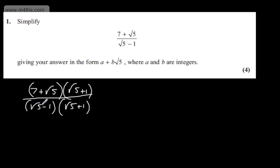In the denominator, we're going to create the difference of squares and end up with a rational denominator. If we just consider now the numerator expanding out, we're going to have 7 root 5, plus 7, plus root 5 times root 5 which is 5, and then finally plus root 5.